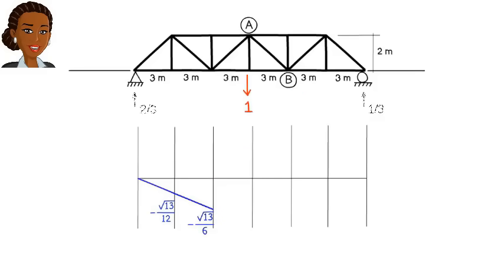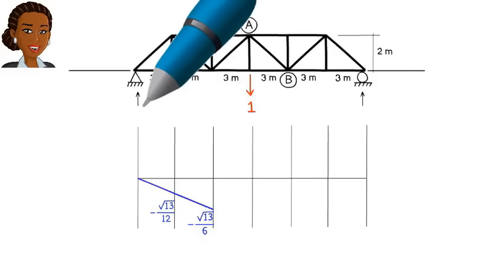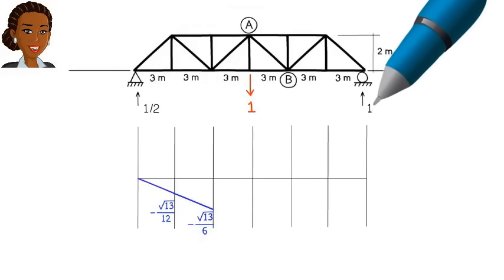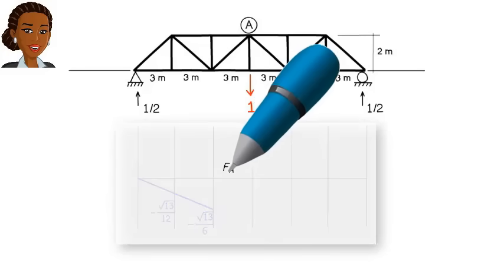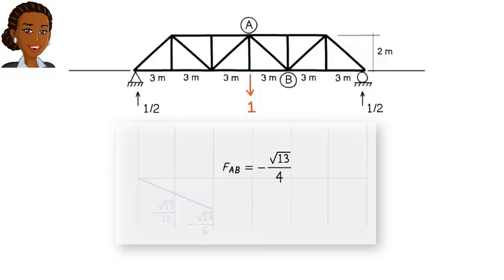We continue moving the unit load from joint to joint, calculating the resulting force in member AB at each step and plotting the value on our line graph until the diagram is complete, like this.